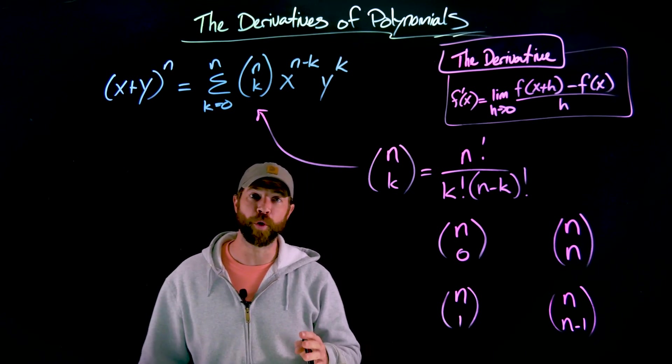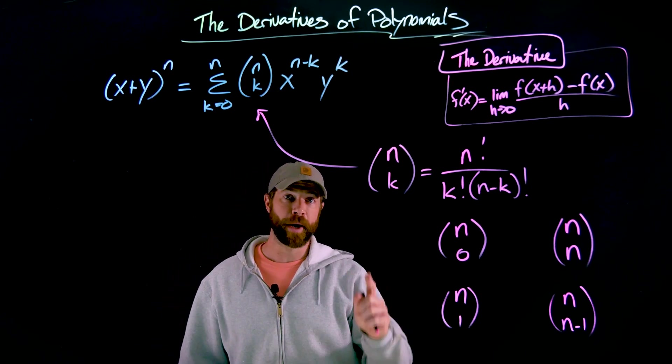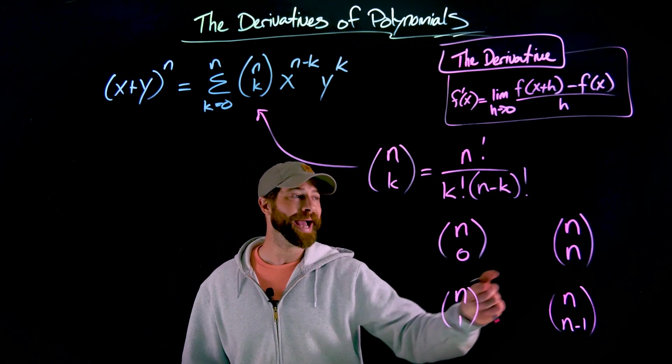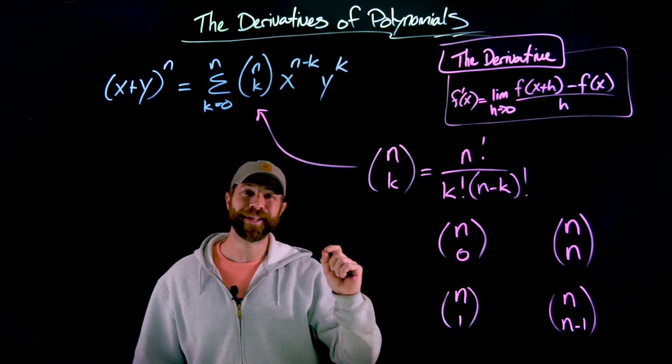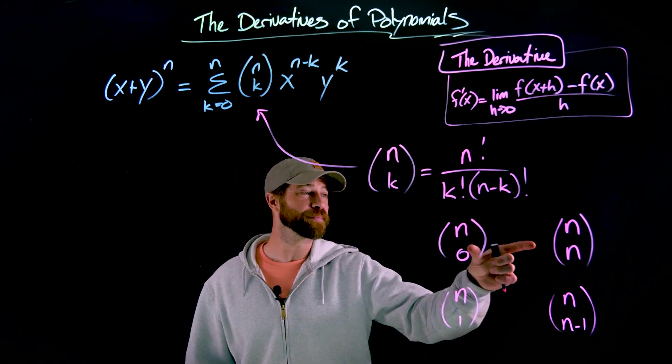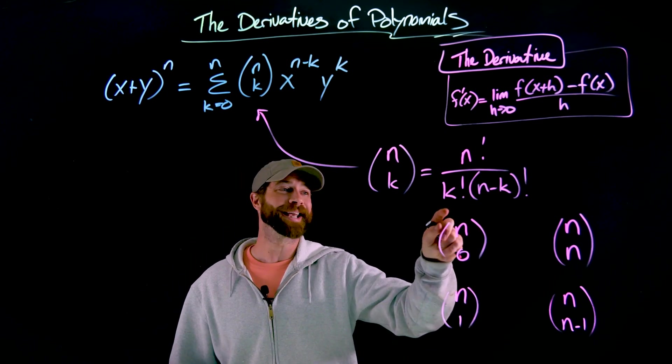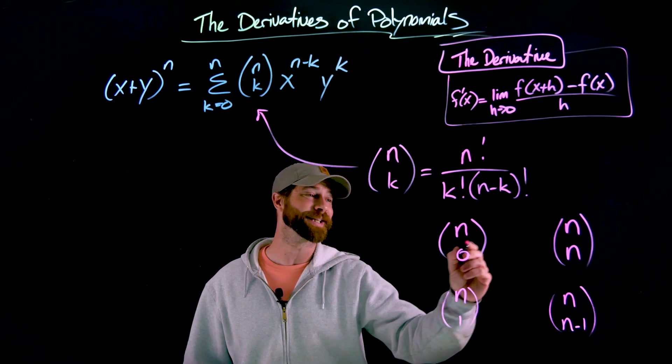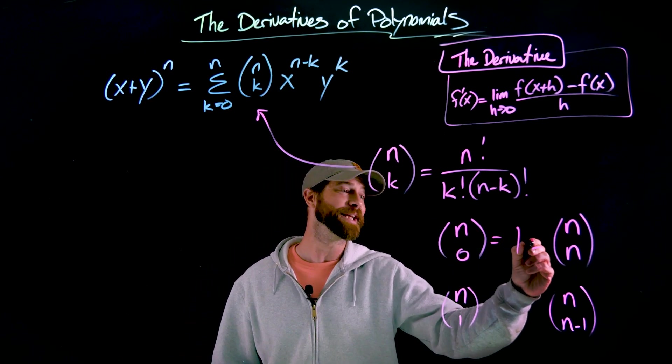Specifically, there are four of these choose statements that I want to look at very quickly. And I won't prove them, but it's very easy to verify. n choose 0 and n choose n both equal 1. In fact, when you plug these statements in here, again, where k is either 0 or k is n, they become equivalent statements. Either way, these are equal to 1.